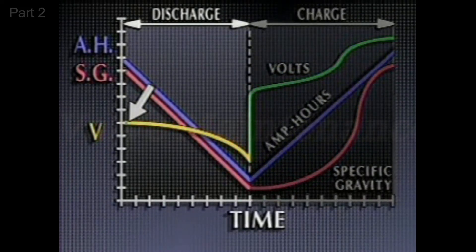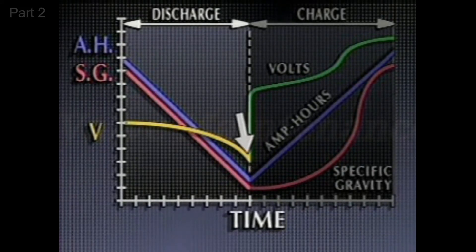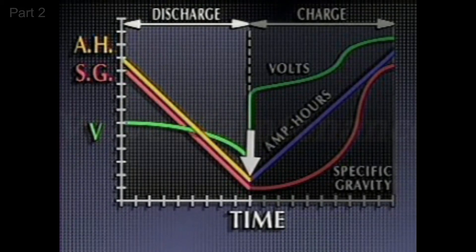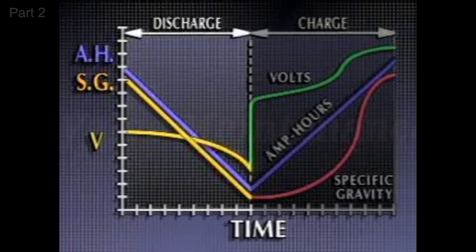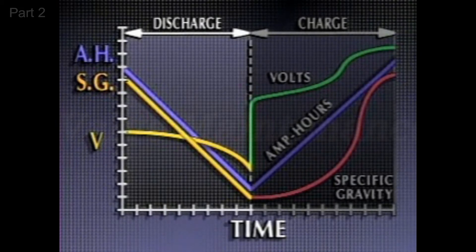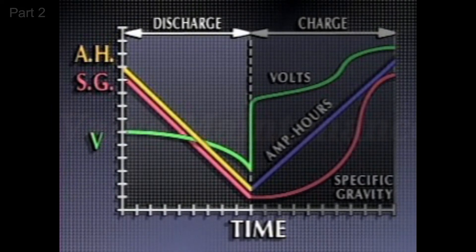When a fully charged cell discharges, cell voltage drops gradually. Then, when the cell is almost completely discharged, the voltage falls off rapidly to its final voltage. At the same time, the cell's ampere hours of capacity decreases at a constant rate, and the cell's specific gravity decreases at the same rate as the ampere hours. When the cell is discharging, its voltage, and especially its specific gravity, change at a relatively constant rate. So a measurement of either cell voltage or specific gravity during discharge will give a fairly reliable indication of how many ampere hours of capacity are remaining in the cell.